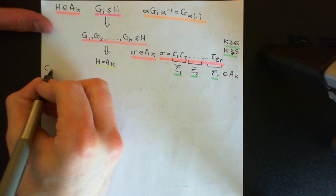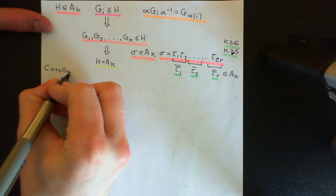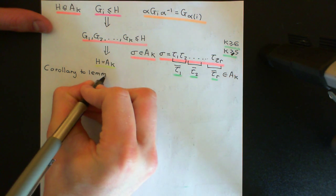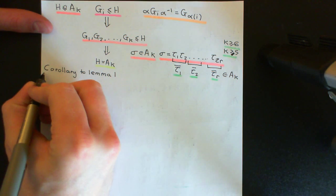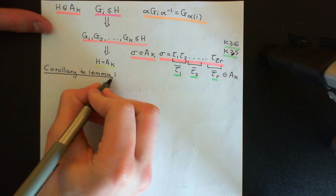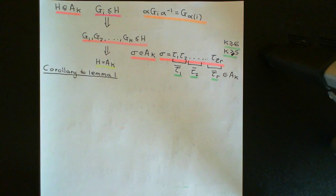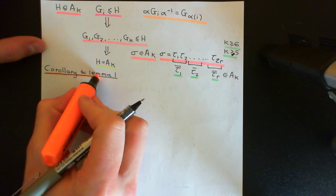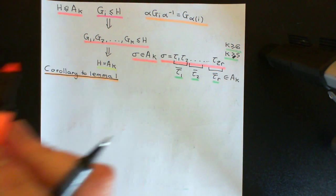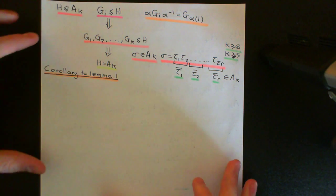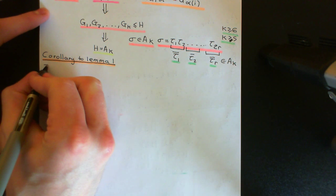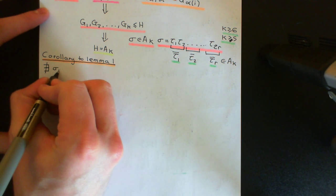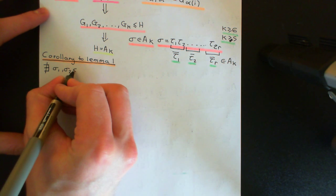To proceed, I'd like to look at a corollary to Lemma 1. This corollary will allow us to prove further restrictions, which we'll call Lemma 2 and Lemma 3. Overall, what we're going to manage to do is restrict things so much that we force this normal subgroup to just be the trivial subgroup, which is a contradiction since we assumed it wasn't. The corollary to Lemma 1 says that there cannot exist inside this normal subgroup two elements sigma_1 and sigma_2 in H